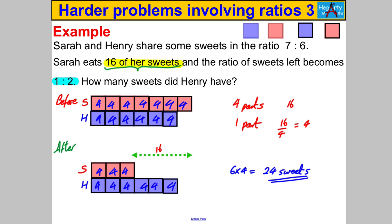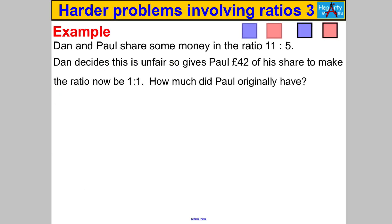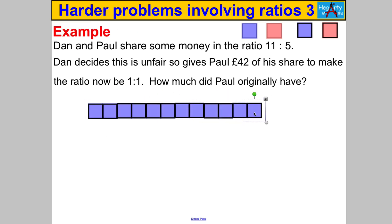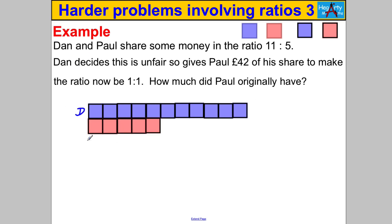Let's try another one — pause the video and have a go. Dan and Paul share some money in the ratio 11 to 5. Let's draw that picture. There's the scenario: 11 to 5, Dan and Paul.